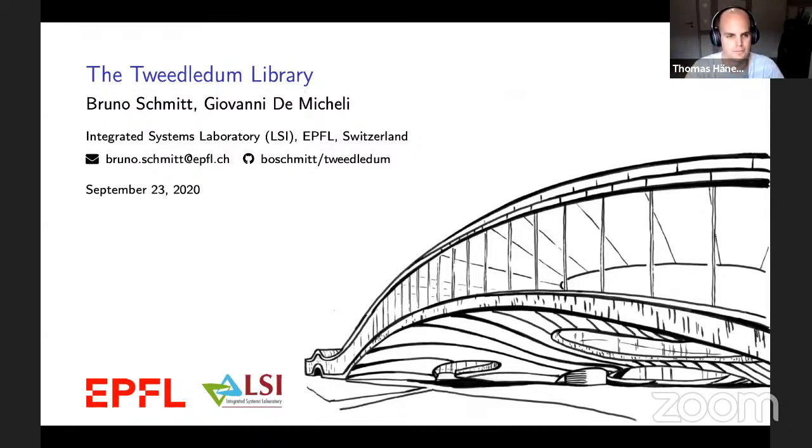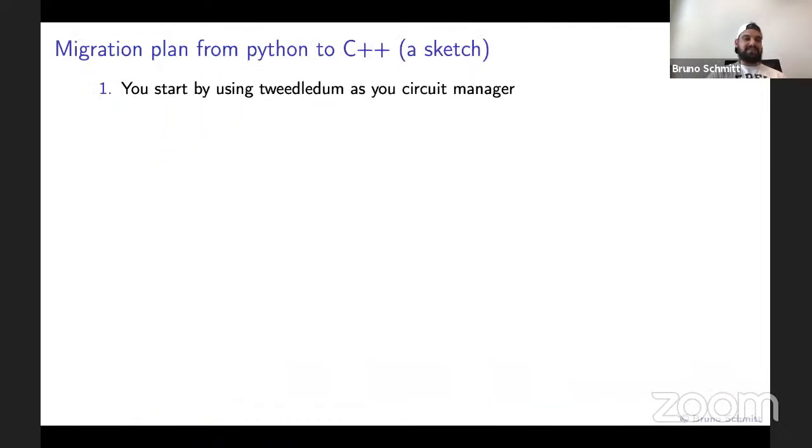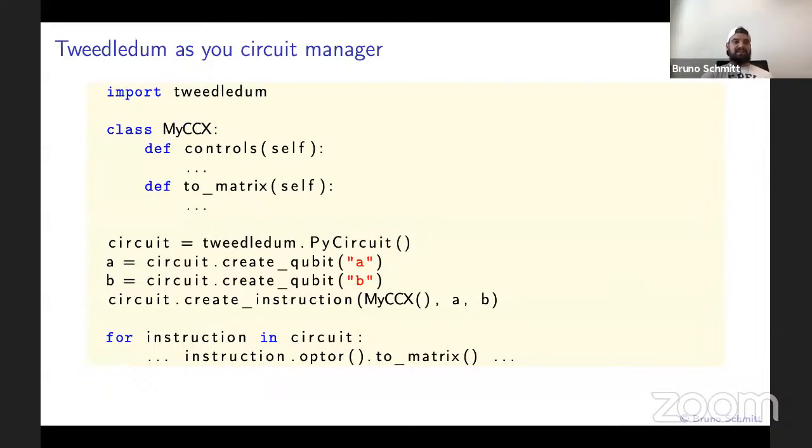Then I guess I have a question also. Have you already implemented this bridge between a framework and Tweedledum for one of the Pythonic frameworks that are out there? So I have not yet implemented it. What we have is this sort of thing. It has not been integrated in any Pythonic framework yet, but you could declare Qiskit gates here and start adding them to the network, then use Tweedledum as your circuit manager.